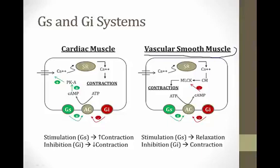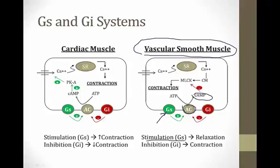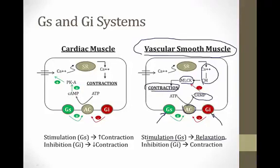In vascular smooth muscle, stimulating GS still activates adenylate cyclase → cyclic AMP, but here cyclic AMP inhibits myosin light chain kinase, which is needed for contraction. So GS stimulation leads to relaxation in vascular smooth muscle — opposite of its cardiac effect. Activating GI leads to contraction. G-proteins are named for their effect on adenylate cyclase, not their ultimate contractile effect, which is why they can be confusing.